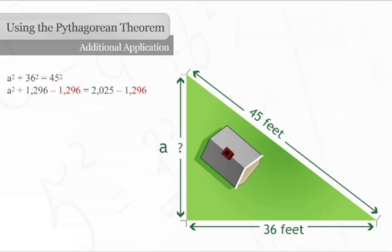Now we will subtract one thousand two hundred ninety-six from both sides, so a squared is by itself on one side of the equation. A squared equals seven hundred twenty-nine. Take the square root of both sides of the equation to find the length of side a. The third side of your yard is twenty-seven feet long.